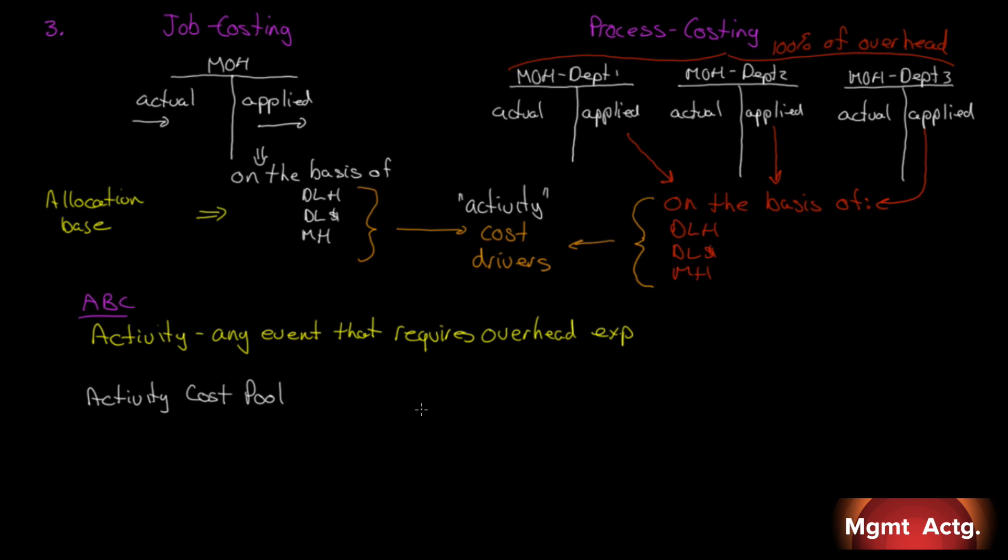And we use something called an activity cost pool. You can think of an activity cost pool as a manufacturing overhead account for an activity. I'm not saying it is a manufacturing overhead account. Be clear. I'm not saying it is. I'm saying you can think of it in that term